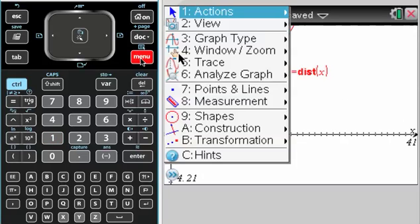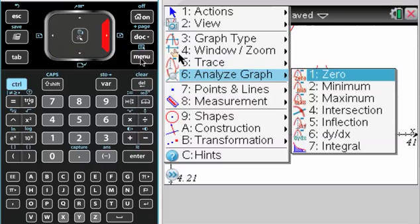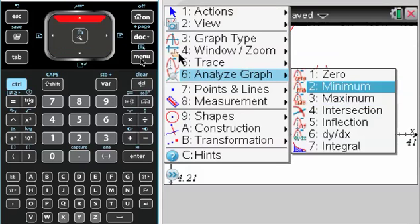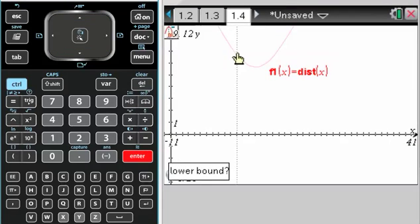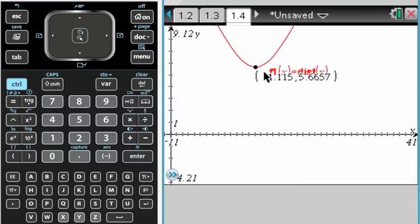But we know how to find a minimum. So menu, analyze graph, minimum, click to the left, click to the right, you get your minimum. If you're not seeing enough decimals, remember, change the float on your settings for graphs and geometry. There's a video about that somewhere. And so this is the answer I get. The minimum distance is 5.66, we could say 6 or 5.7, and that occurs at 14.115.